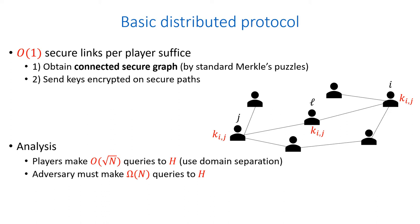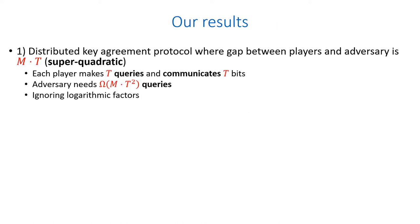By using domain separation, we can make recovering all the keys harder for the adversary. The gap between the adversary and the honest players stays quadratic, and the main question is: is this gap optimal? In our paper, we introduce a new distributed key agreement protocol in which each player makes t queries and communicates t bits, while an adversary that wants to recover a key has to make omega of n times t squared queries to the random oracle. This gives us a query complexity gap of n times t between the honest players and the adversaries.